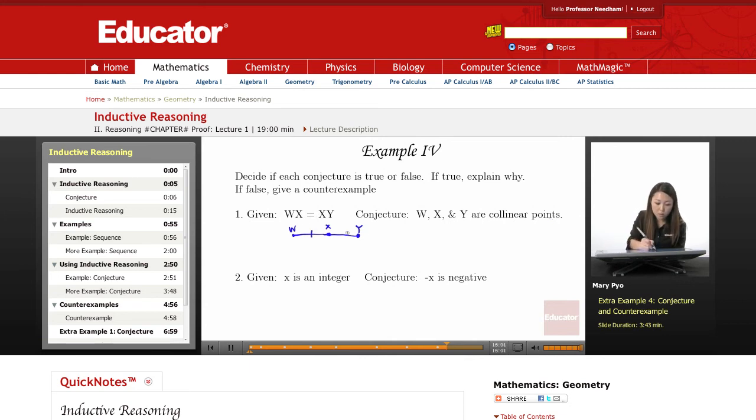Conjecture is that these are collinear. Is that always true? Can you think of an example of when it's not true?